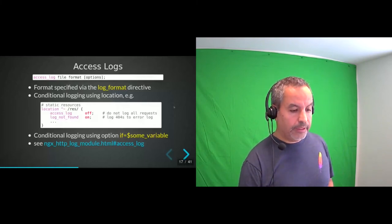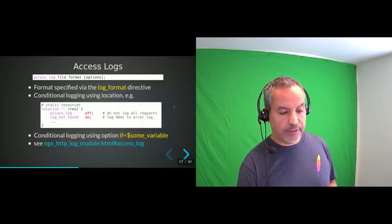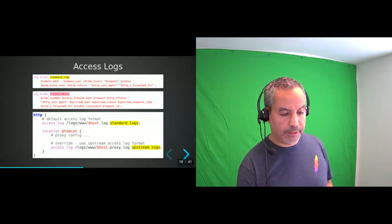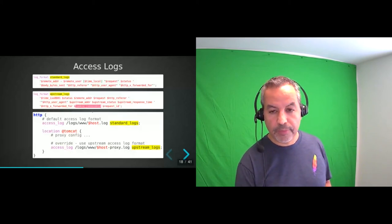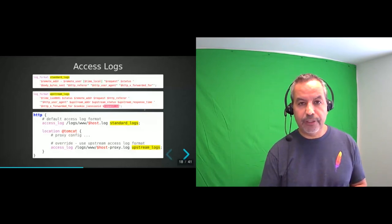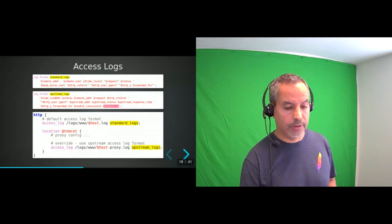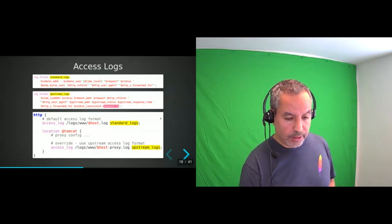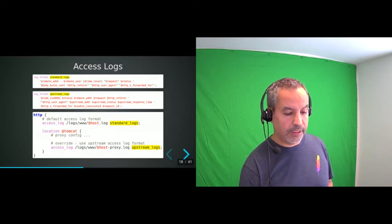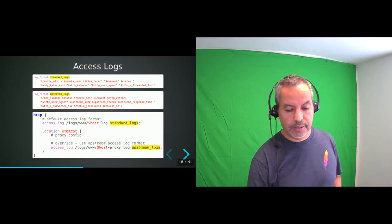Here's an example defining two log formats: `standard` has regular fields, while `upstream` adds extras like the `JSESSIONID` cookie and a request ID. The request ID is a unique identifier created by nginx — I find it very useful to log it both in nginx and in Tomcat so when tracing an error I can identify exactly which request it belongs to. Once defined, I use both formats in different places — the default access log uses `standard`, and in the Tomcat proxy location I specify the `upstream` format.